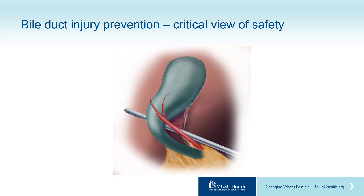A very good way to prevent bile duct injury is to create a critical view of safety. This may not always be possible in cases of severe inflammation where the infundibulum and body of the gallbladder are fused to the porta hepatis. If the hepatocystic triangle is dissectable, the principles of the critical view of safety are to clear all tissue from the hepatocystic triangle with lateral retraction of the infundibulum and cephalad retraction of the fundus, so that the body of the gallbladder abutting the cystic plate is visible.